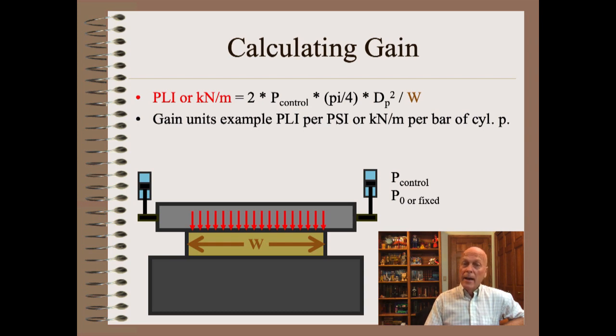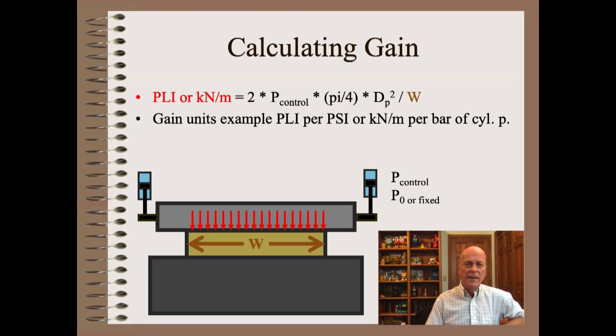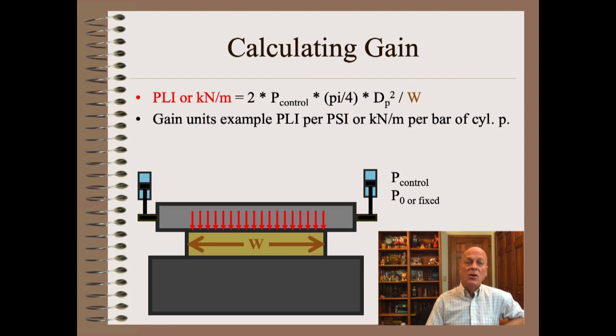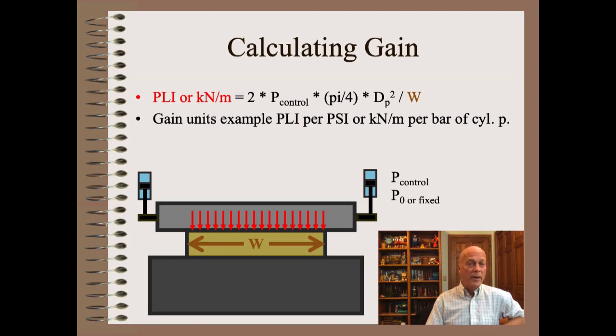The design engineer should really calculate gain and publish a table of nip load versus cylinder pressure in the maintenance manual. They would have to do much of this work anyway to properly size cylinders. Recall in previous clips we showed that good pneumatic sizing keeps cylinder pressures in the 7 to 70 psi or 0.5 to 5 bar range. Calculating gain is usually quite simple, especially for linear systems such as shown here. You merely multiply the area of the cylinders and divide by web width. Gain can be expressed in many ways, but examples would be PLI of nip versus psi of cylinder pressure, or kilonewtons per meter of nip per bar of pressure.